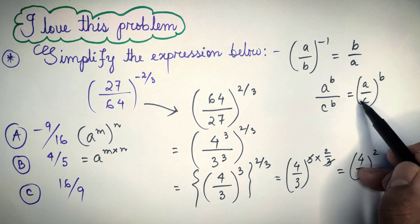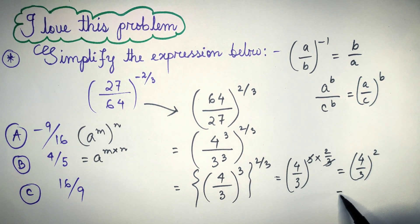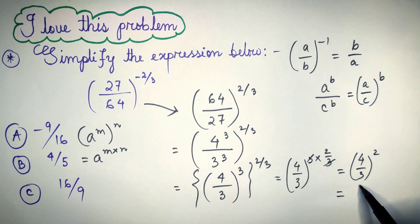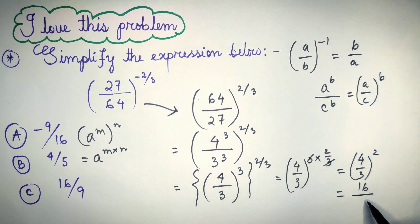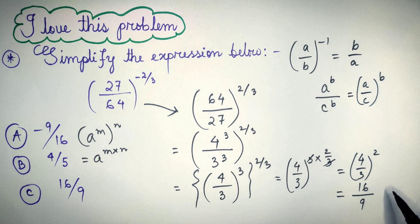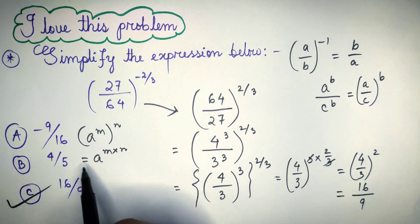Again, using this same formula, we get 4 square is 16 and 3 square is 9. So, the correct answer is option number C, 16 by 9.